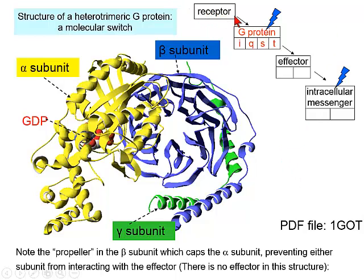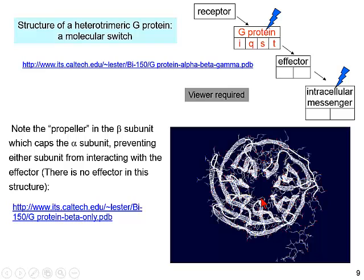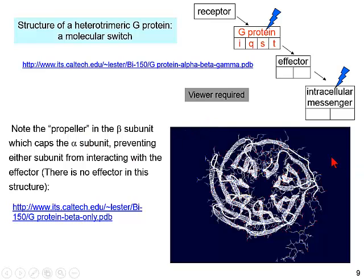There are roughly four flavors of G-proteins. Here is the beta propeller structure — you can download these PDB files and view them with free viewers such as Pymol. There is no effector in this particular structure.